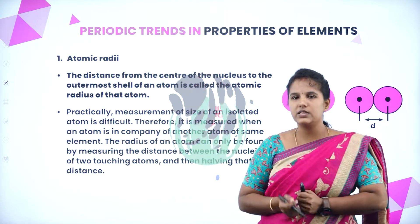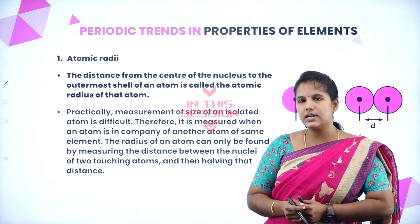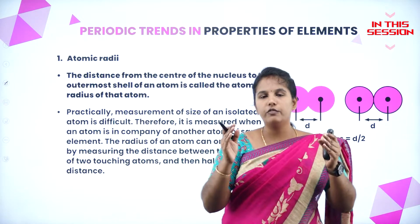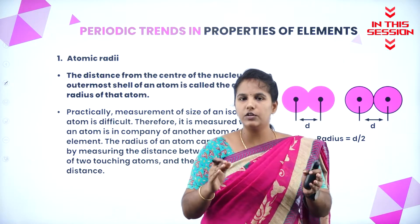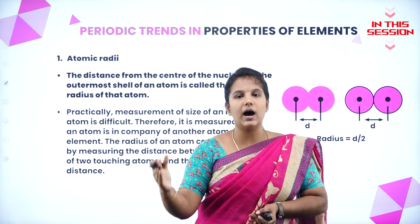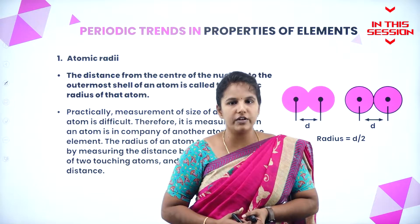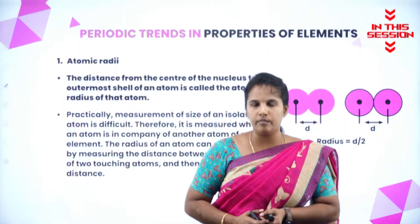Atomic radii is very simple. It is the distance from the center of the nucleus to the outermost shell of an atom.